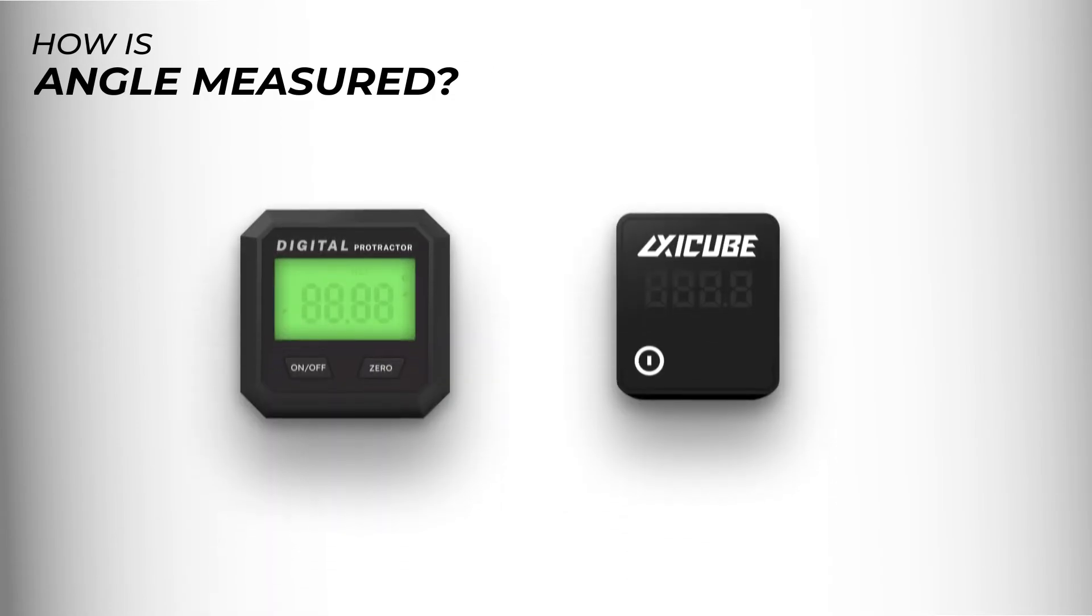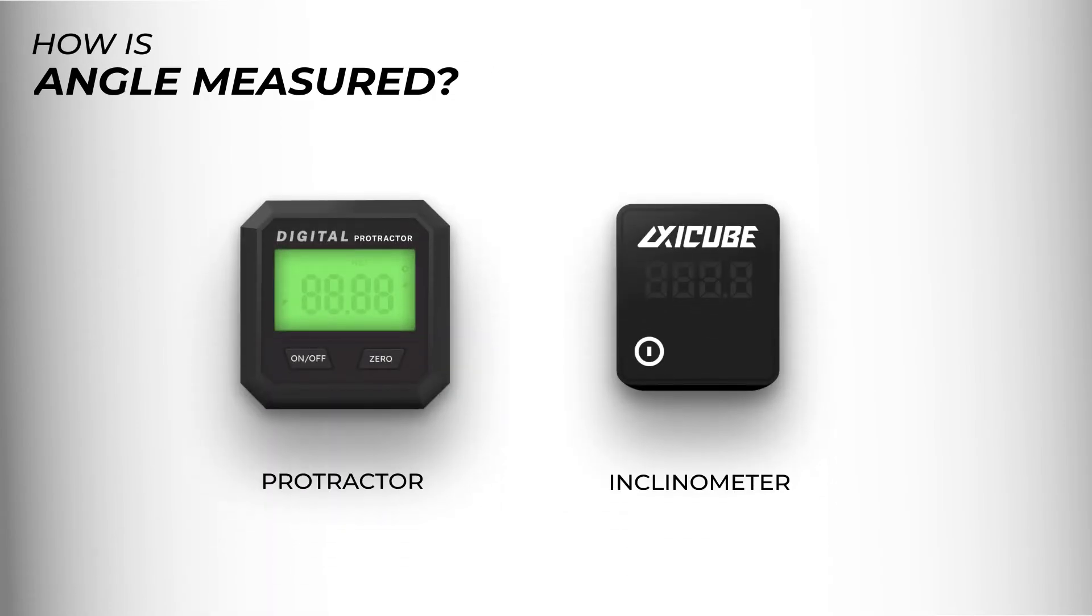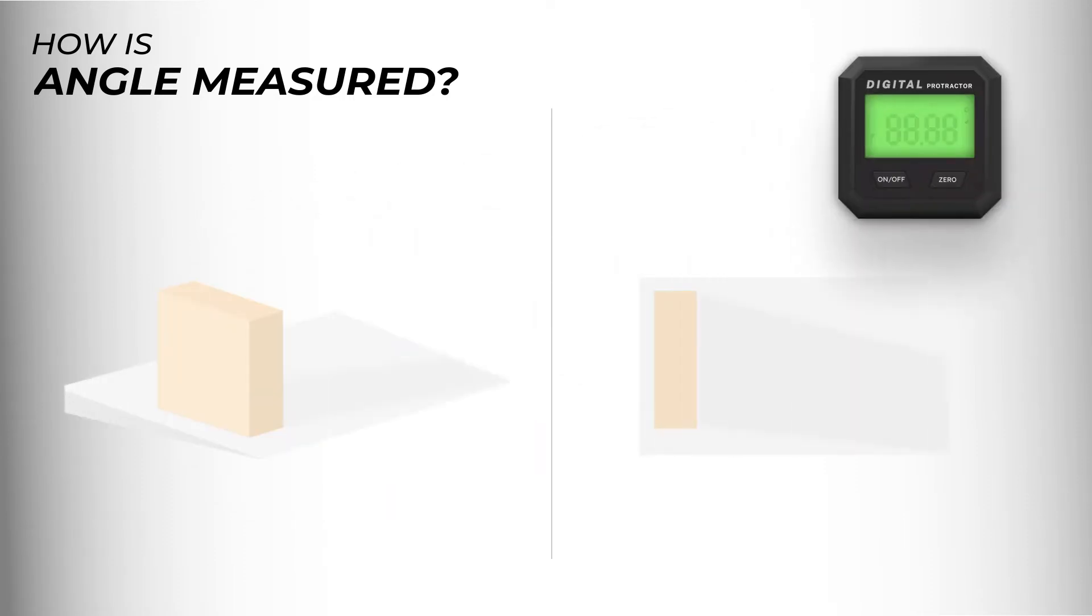Now, to measure the sharpening angle, a protractor and an inclinometer are used. As an example, let's take a look at a measurement made with a basic protractor. It will measure the angle between its two positions in a certain plane.